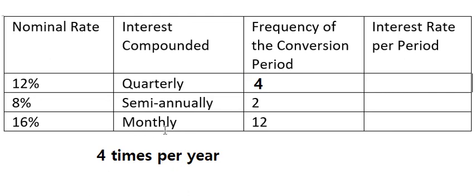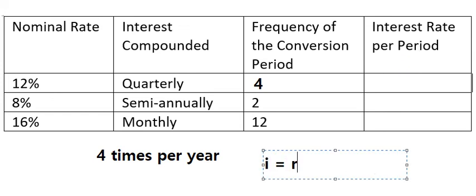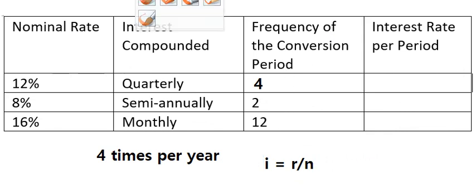For the interest rate per period, we have i equals r divided by n, where r is the nominal rate and n is the frequency of the conversion period. So using 12 percent divided by four, we get three percent.